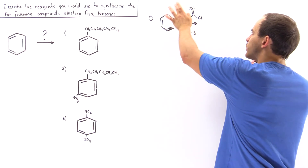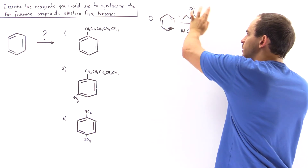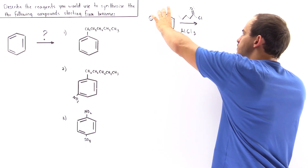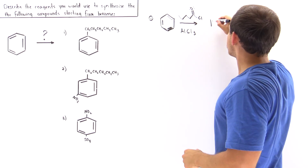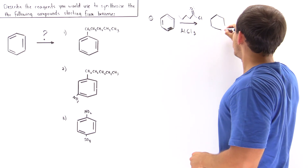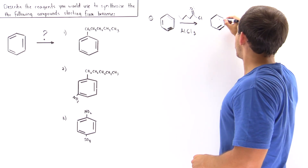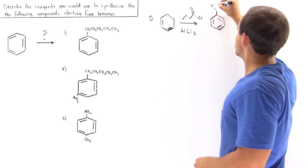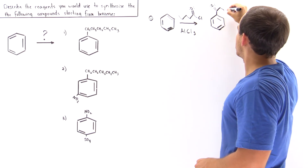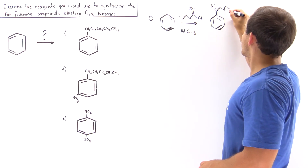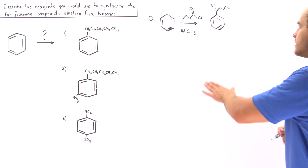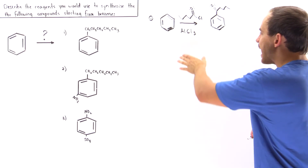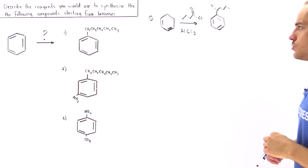This molecule interacts with the aluminum chloride to create a good electrophile, which attaches onto the benzene. The final product of this Friedel-Crafts acylation reaction is a mono-substituted benzene with a five-carbon chain and an oxygen — a ketone group attached to the ring.